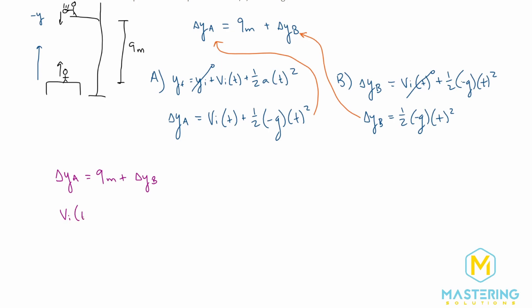v_i times t plus one half times negative g times t squared equals y_b, which we said, let's see, we have nine meters plus now Δy_b, so we have one half times negative g times t squared.